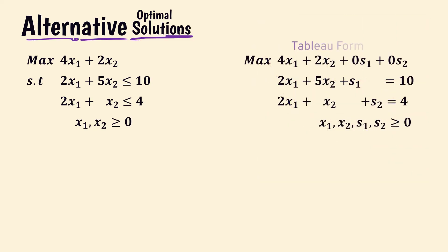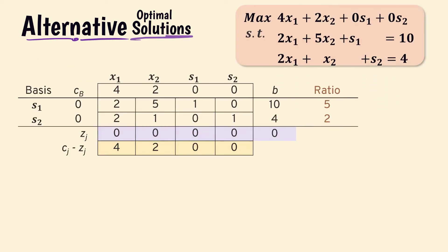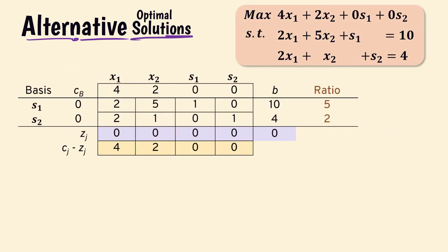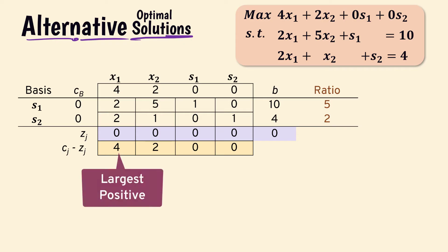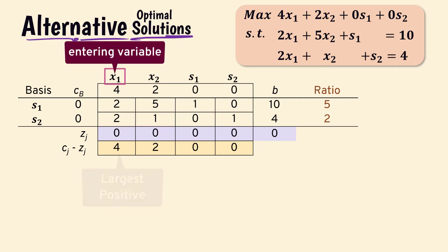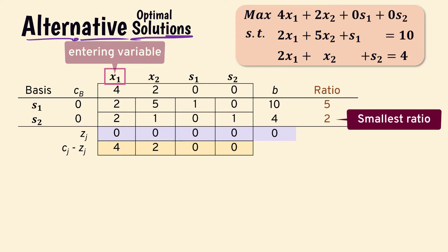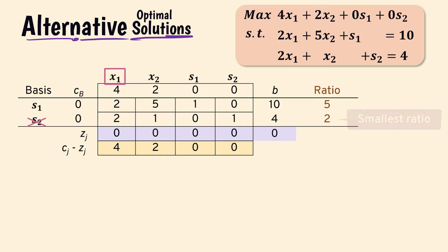The tableau form of the model shows a slack variable for each constraint. Here we have the initial simplex tableau. The largest positive value in the net evaluation row is 4, indicating that x1 will be entering the basis. The smallest ratio is 2, indicating that s2 should be removed from the basis. That is, the pivot element is 2.